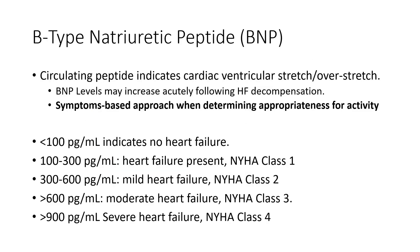B-type natriuretic peptide, or BNP, is released from the ventricles in response to stretch — typically monitored for heart failure to track long-term severity. Values below 100 indicate no heart failure. The more stretch, the more BNP. We need to look at this from a chronic standpoint: what are their normal values and clinical disposition? Someone normally in functional class II having a BNP of 300 is less concerning than someone normally at class I. When a heart failure patient decompensates, BNP levels can increase substantially, potentially above 900.